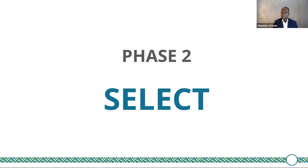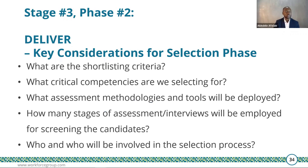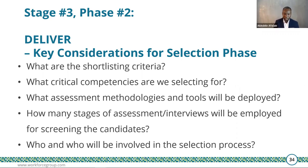The next phase under Delivery is Select. HR practitioners should answer the following questions: What are the shortlisting criteria? How can you identify the individual who can deliver on your business strategy — the reason you are running a graduate or management training program? What are the critical competencies you are selecting for? What assessment methods will you use to evaluate people based on those critical competencies? How many stages of assessment or interview should you have? Are you going to run interviews only, or consider an assessment center? And who will be involved in your selection process?